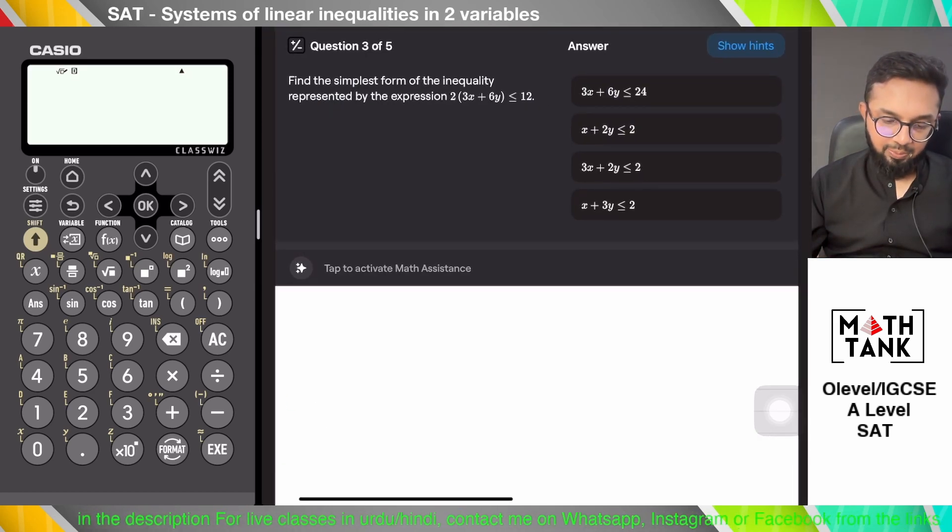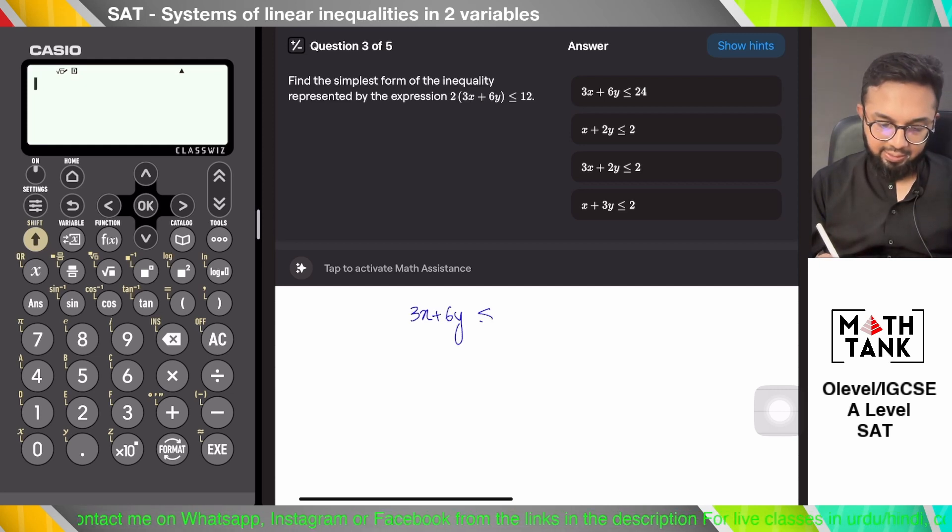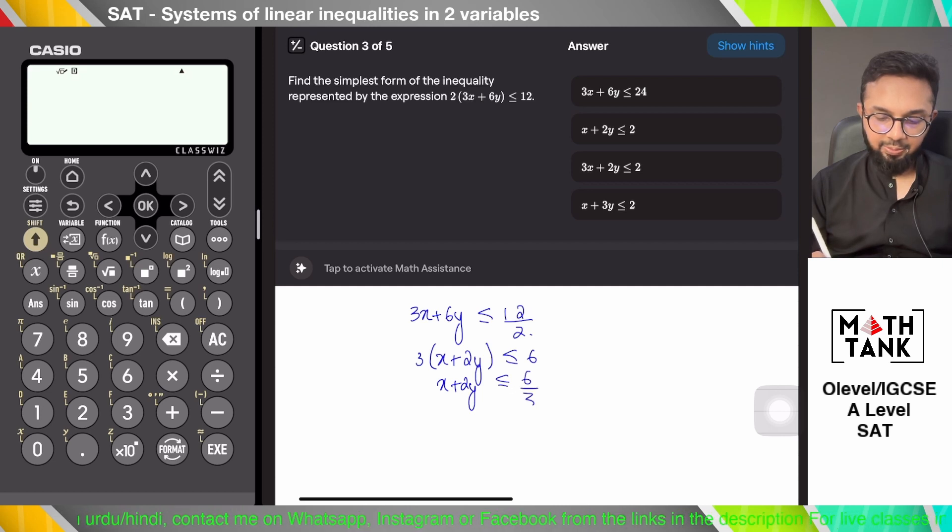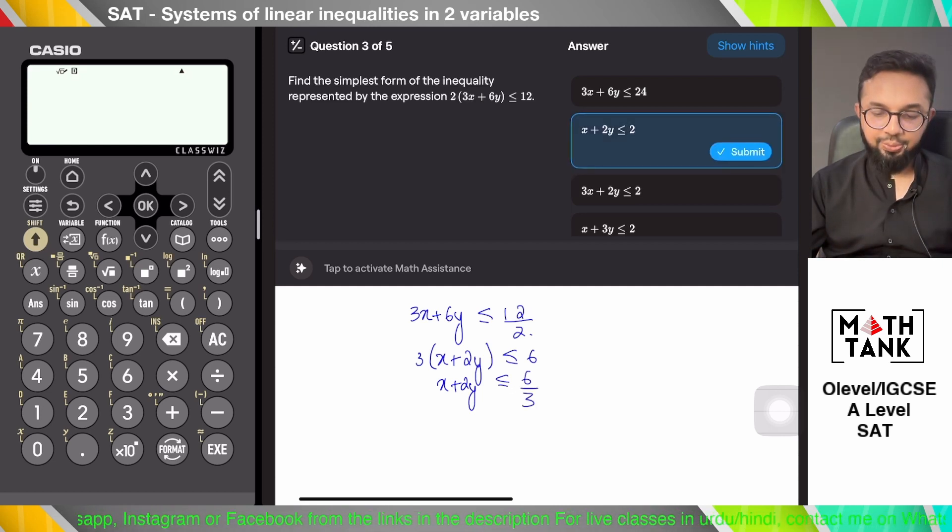Find the simplest form of the inequality represented by this. So 3x plus 6y is less than or equals to 12 divided by 2. I can factor out another 3 and say that this is x plus 2y is less than or equals to 6 divided by 3, which is 2. So x plus 2y is less than or equals to 2.